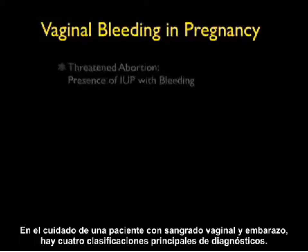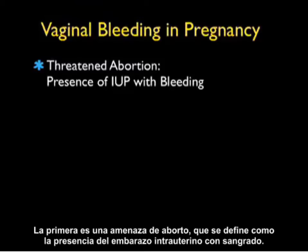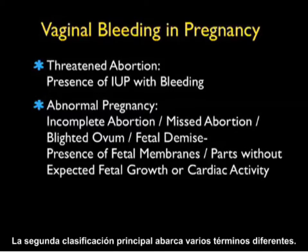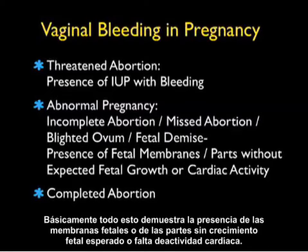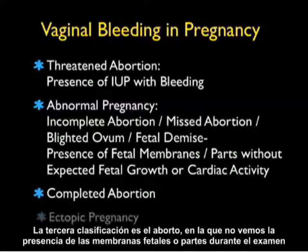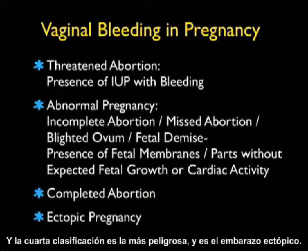When taking care of a patient who has vaginal bleeding in pregnancy, there are four main classifications of diagnoses. The first is a threatened abortion, defined as the presence of an intrauterine pregnancy with bleeding. The second encompasses incomplete abortion, missed abortion, blighted ovum, and fetal demise — all meaning fetal membranes or parts without expected fetal growth or cardiac activity. The third is a completed abortion with no further fetal membranes or parts and a closed cervical os. The fourth and most dangerous is ectopic pregnancy.